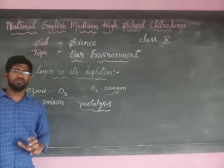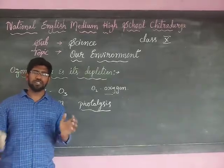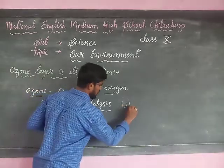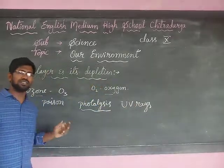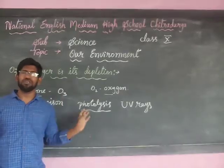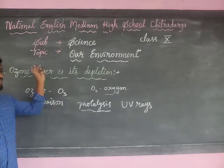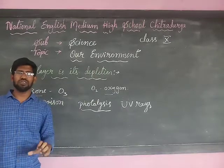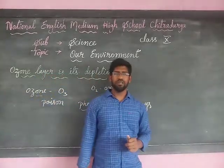This ozone layer is very helpful and very important to living organisms on the earth, because it protects us against UV radiations. UV means ultraviolet rays, which are very dangerous to living organisms — they can destroy everything on the earth. So let us study the ozone layer: its formation, its depletion, all in detail with a PPT video.